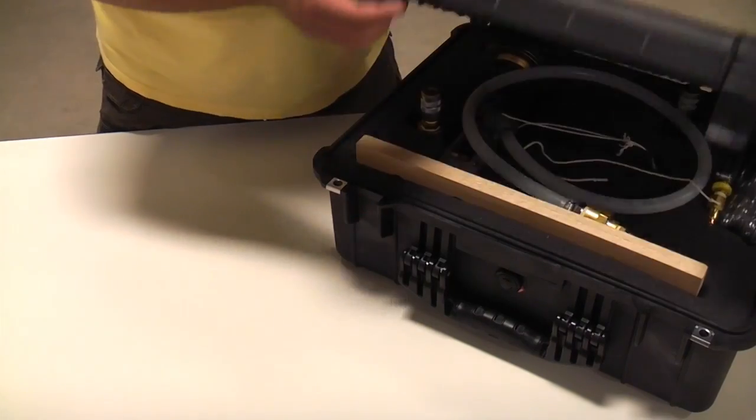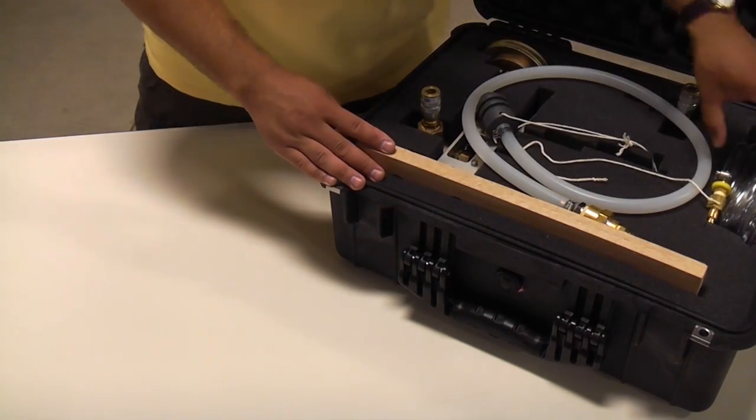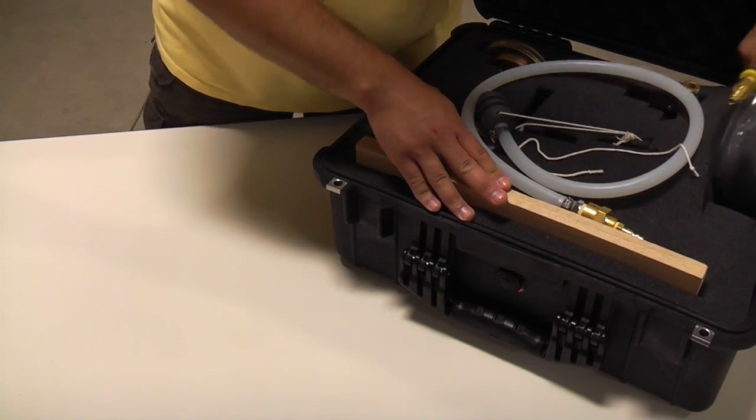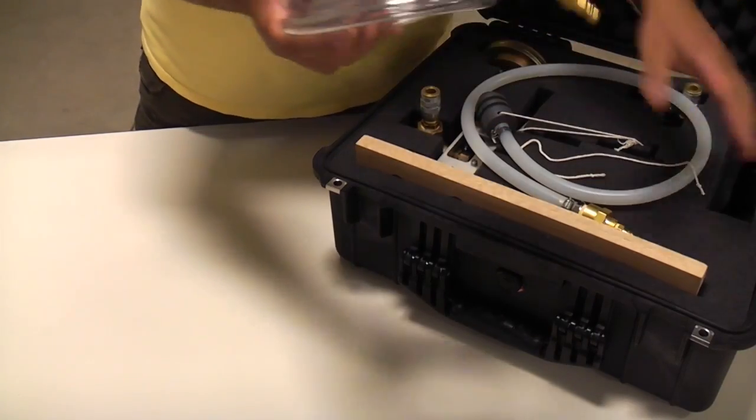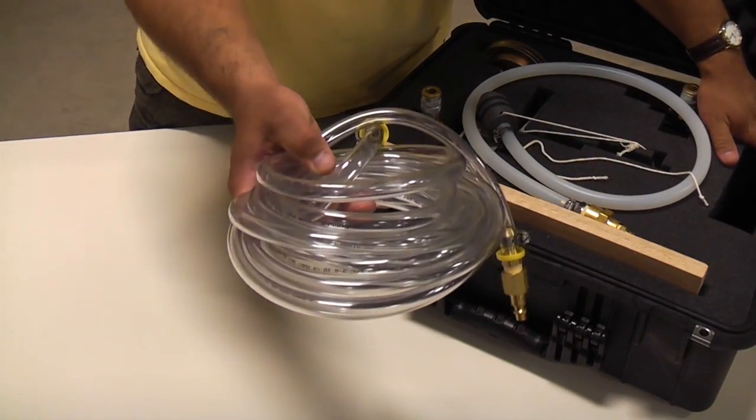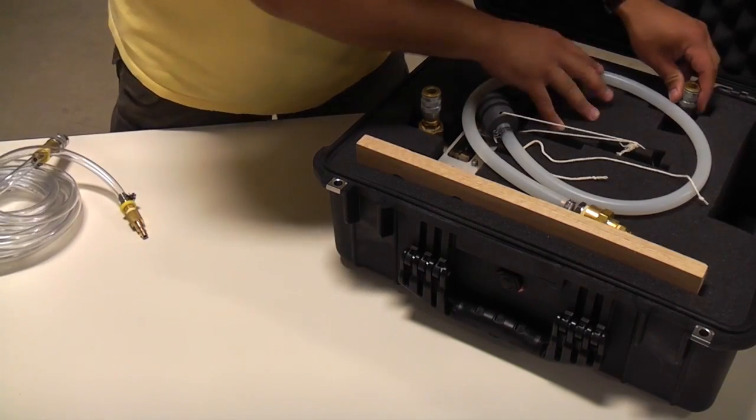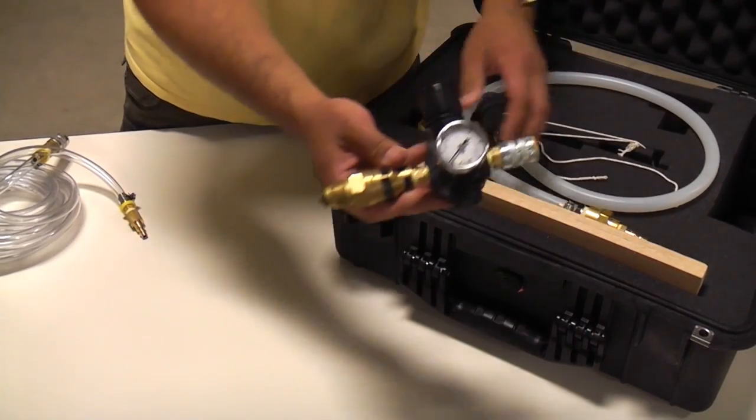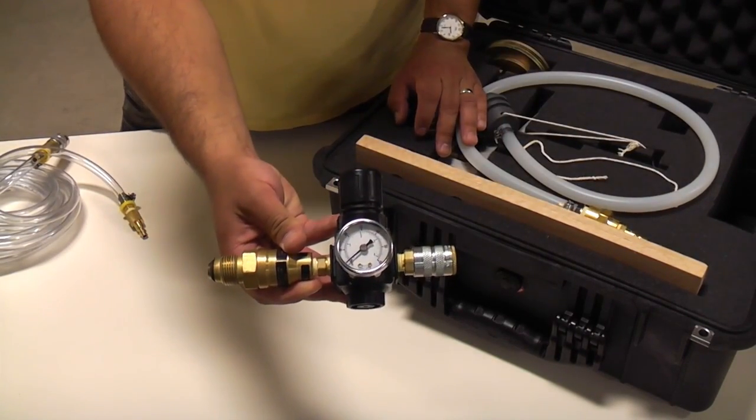Inside the inflation kit you will find a whole bunch of hose and an adjustable regulator.